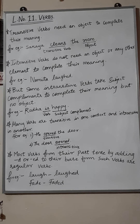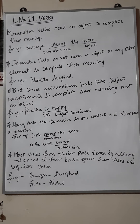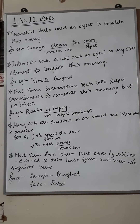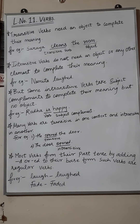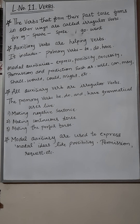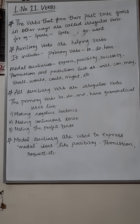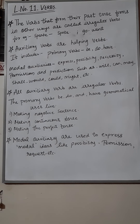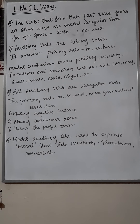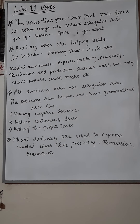Most verbs form their past tense by adding D or ED to their base forms — such verbs are known as regular verbs. For example, 'laugh' becomes 'laughed' by adding ED. Verbs that form their past tense in other ways are called irregular verbs. When we change the spelling, it becomes an irregular verb. For example, 'speak' becomes 'spoke', 'go' becomes 'went', 'forget' becomes 'forgot'.